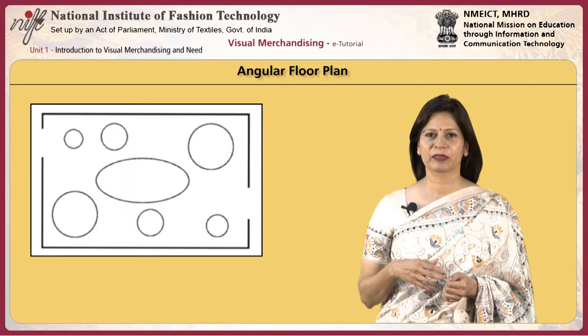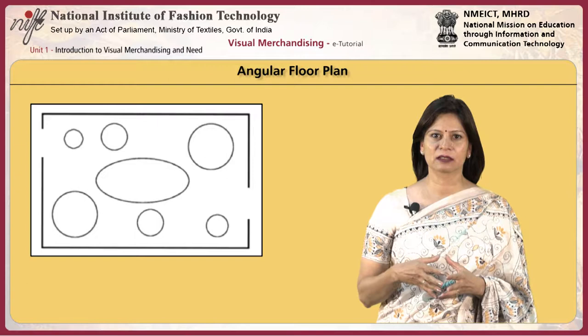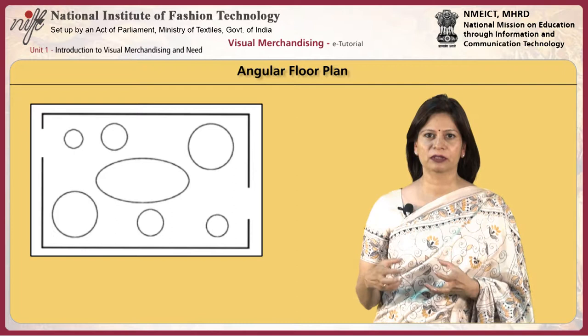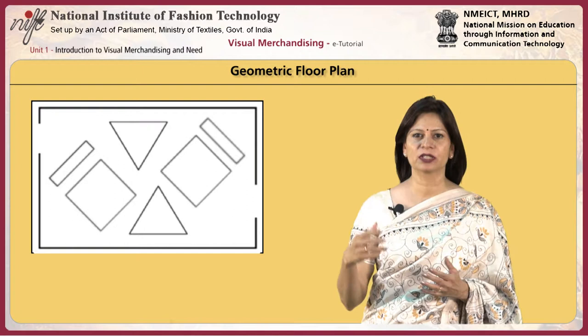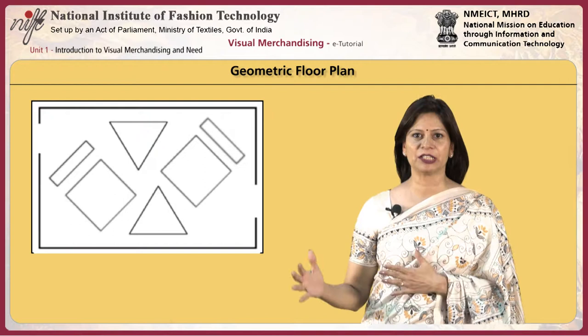Next is the angular flow plan, which is generally done in convenience stores and the fixtures are randomly placed. The geometric flow plan follows geometry and tries to give space all around so that a consumer can move around and get better visibility of the products.